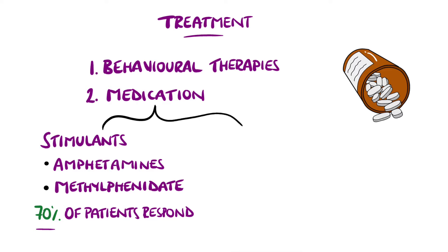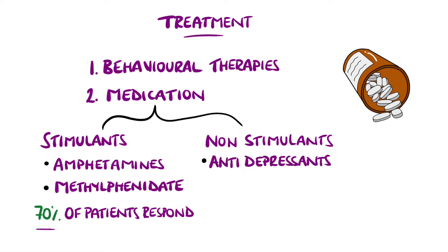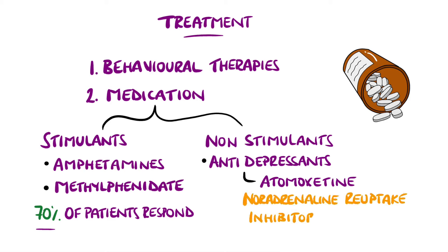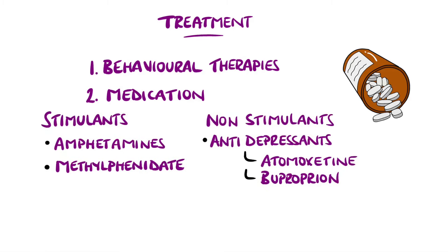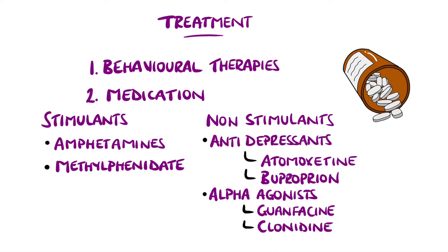Non-stimulant medications include antidepressants and alpha-adrenergic agonists. Atomoxetine is a noradrenaline reuptake inhibitor and is particularly commonly used, and bupropion is another option. Guanfacine and clonidine are alpha-adrenergic agonists, which are other options particularly in children and adolescents. Exercise has also been found to be beneficial as an add-on therapy.